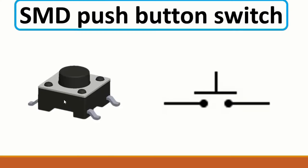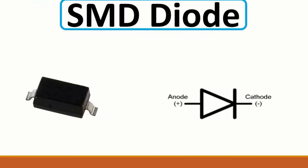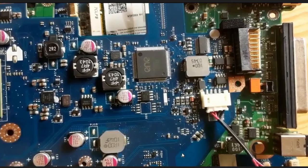Here we have the SMT push button switch - a normal switch - and we find this switch in the on/off button. Then we have the normal diode. SMD means surface mounted device, meaning the component is mounted on the surface of the motherboard, not through holes. This is a diode with the anode on one side and the cathode on the other.